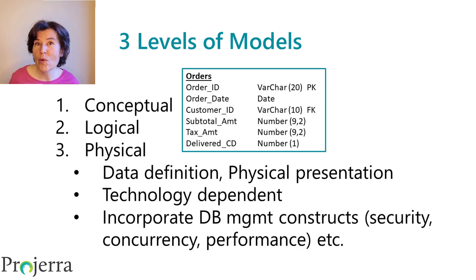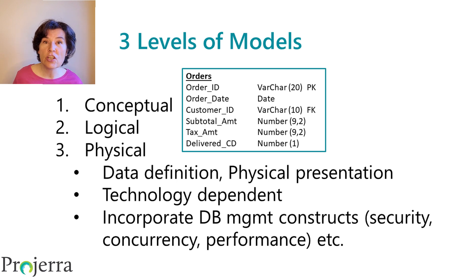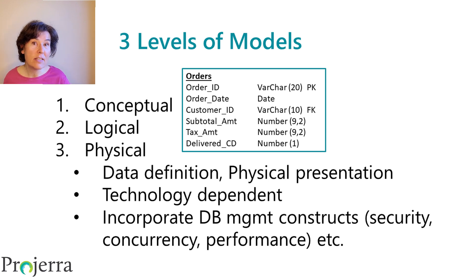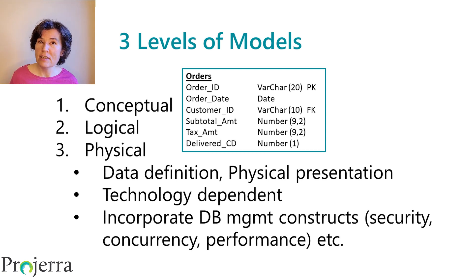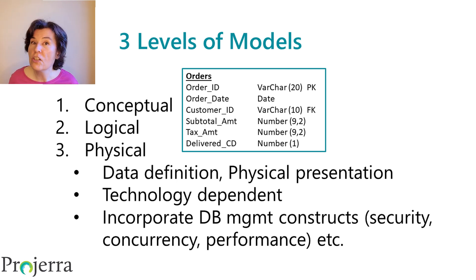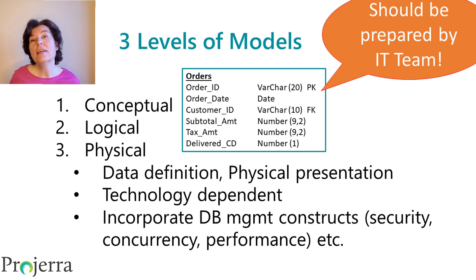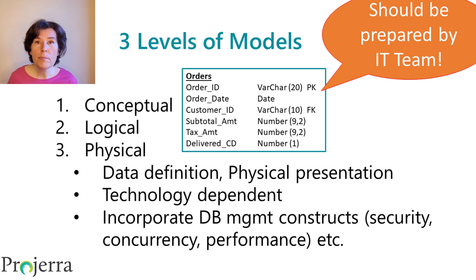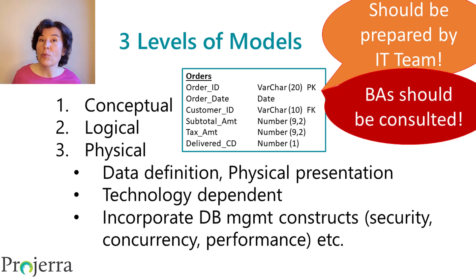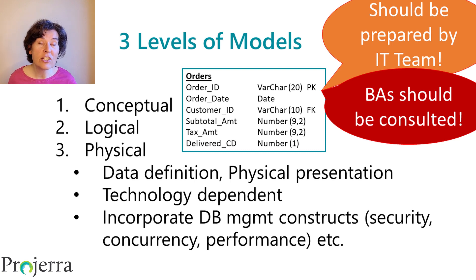The third type of model is the physical model. It extends and translates the logical model into the physical representation that will be used inside the database. As data types available in databases are dependent upon the particular technology, this model is technology dependent. Furthermore, this model considers various non-functional requirements such as data security, concurrency, performance, and other factors. These models should be prepared by members of the IT team responsible for implementing the database, but BAs should be consulted because BAs understand how the business will be using the data and the information contained within.